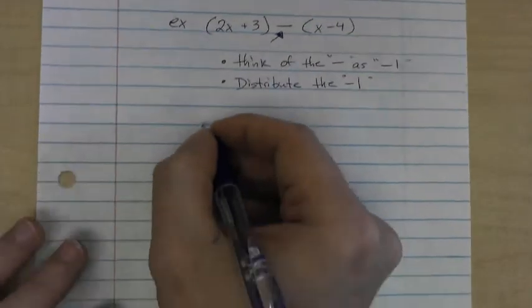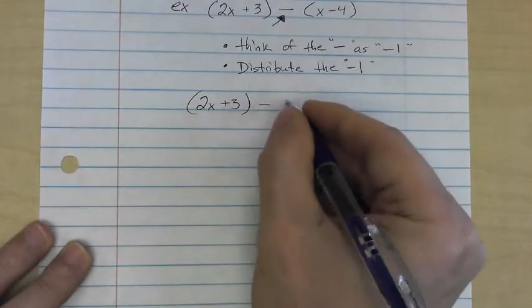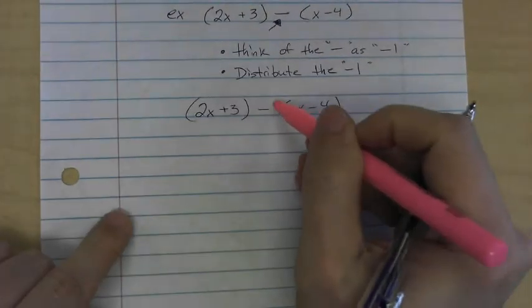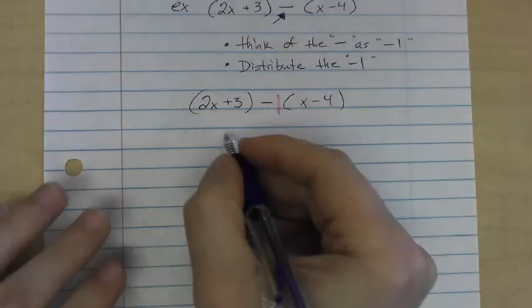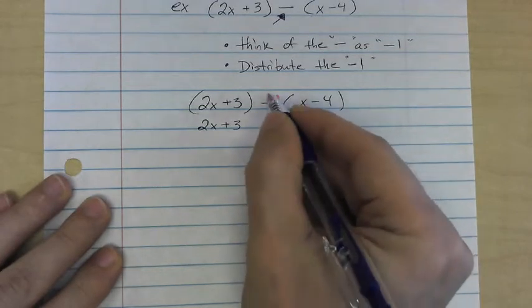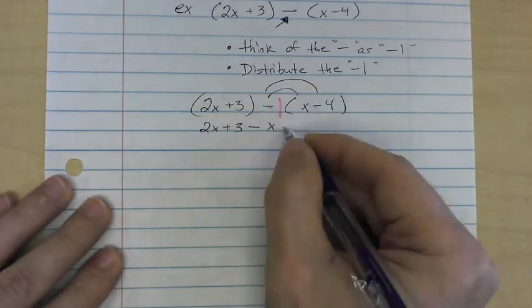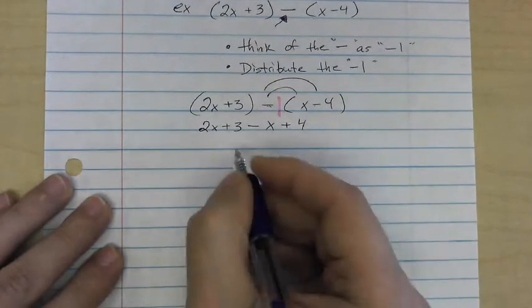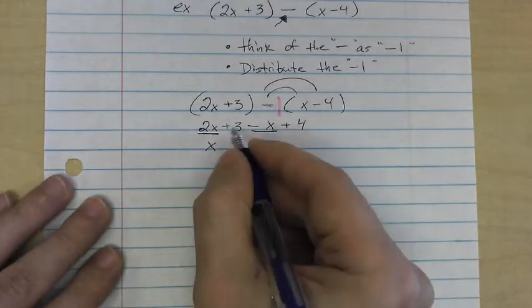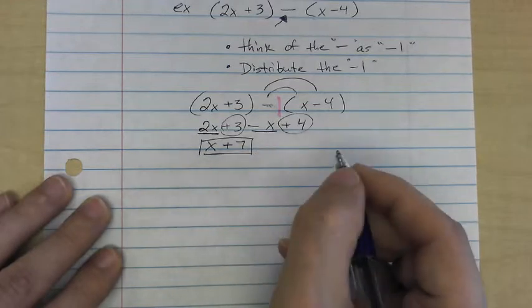So, using that same exact example, 2x plus 3 minus x minus 4, what you're going to do is put a 1 in right there, and then you're going to say, okay, this is 2x plus 3. Right here, I have different signs, so I put a minus, 1 times x is x. Same signs, so I put a plus, and 1 times 4 is 4. Now, 2x minus an x is going to leave 1x, and 3 plus 4 is going to be positive 7. So our answer is x plus 7.